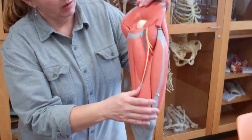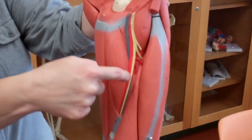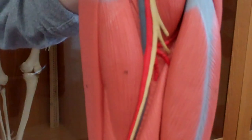Then, on this model, we have the femoral artery and the femoral vein on the front.